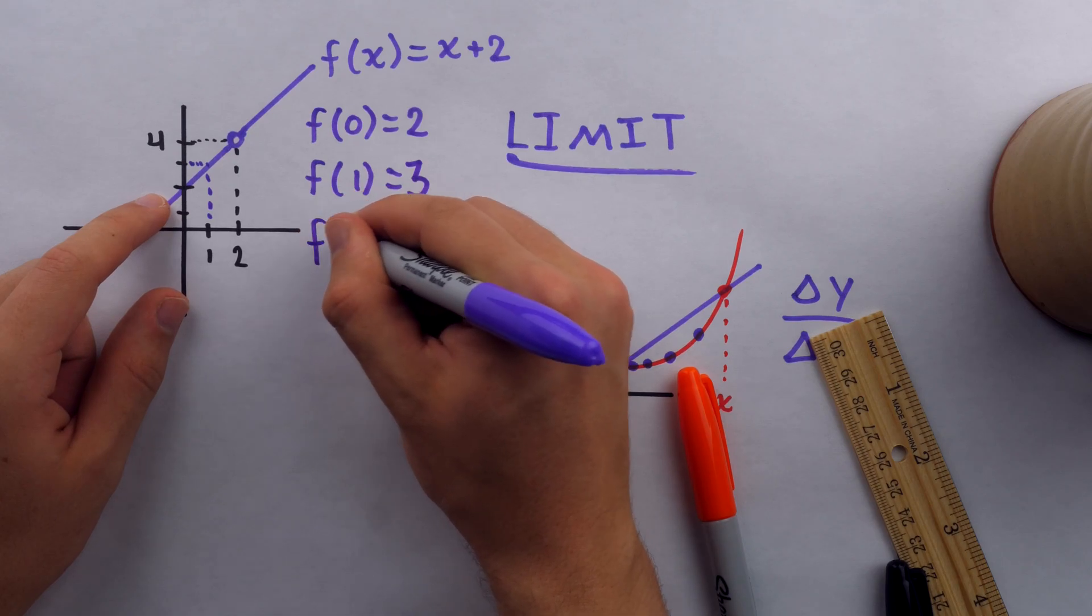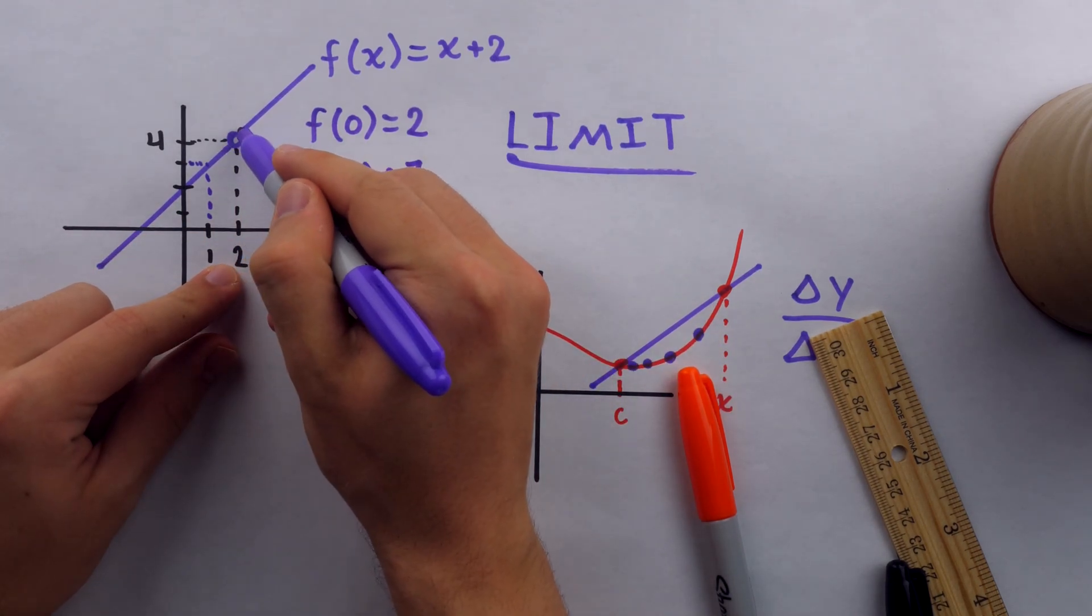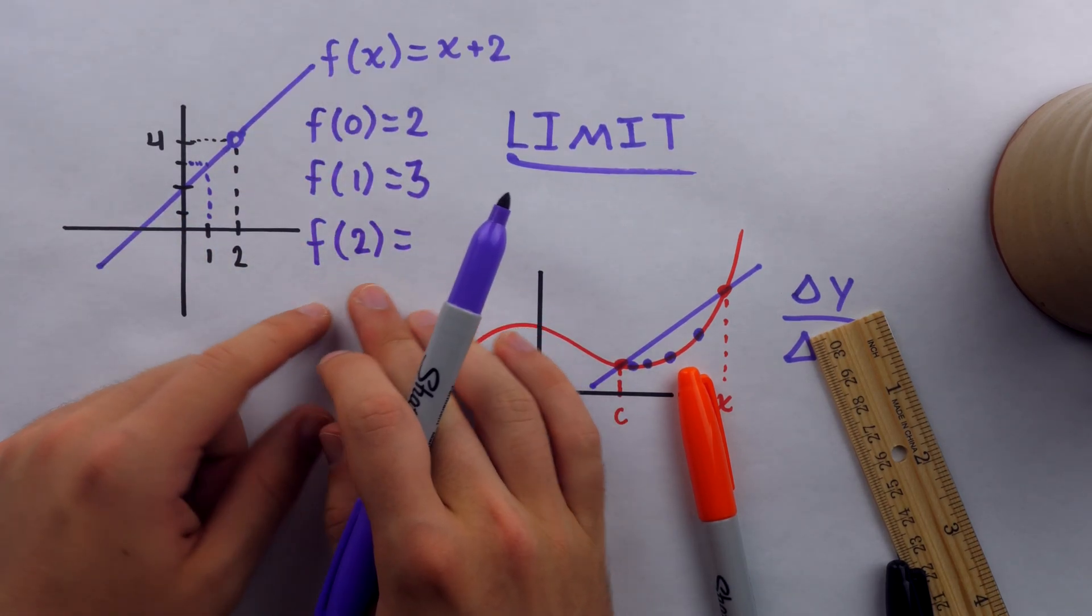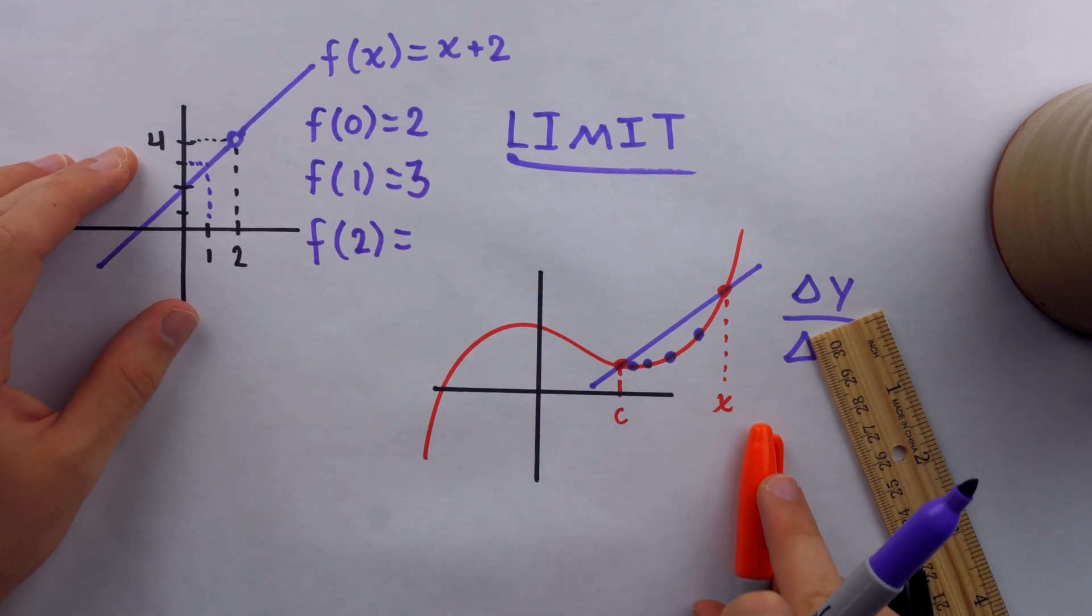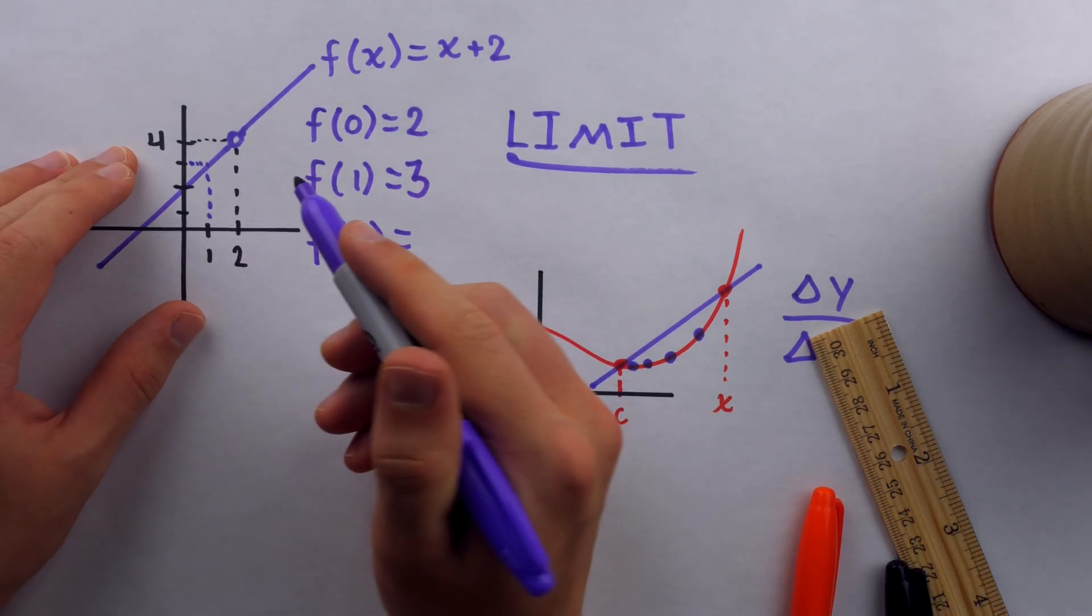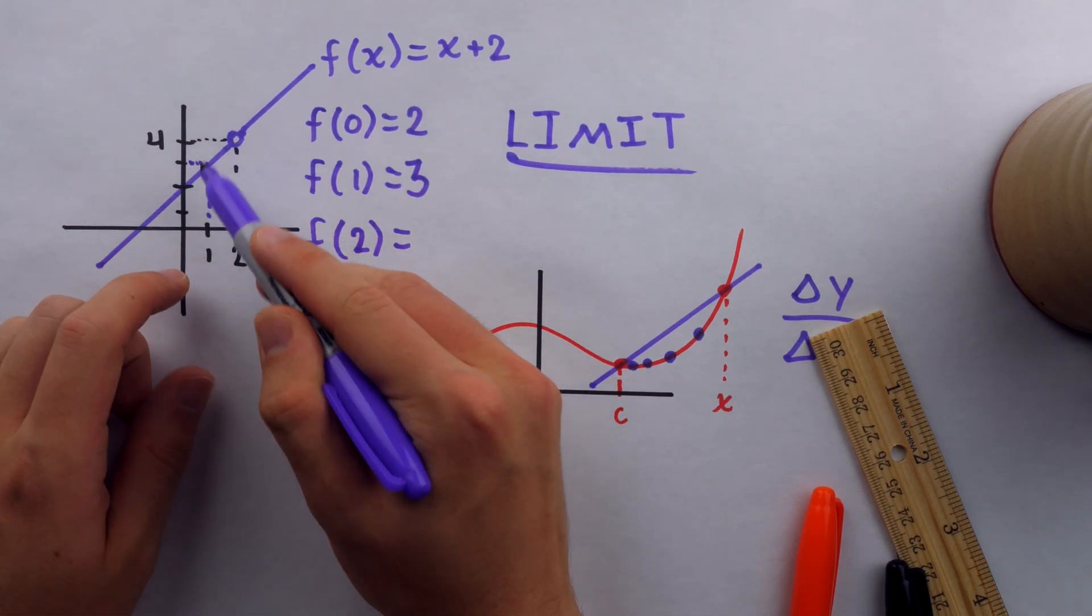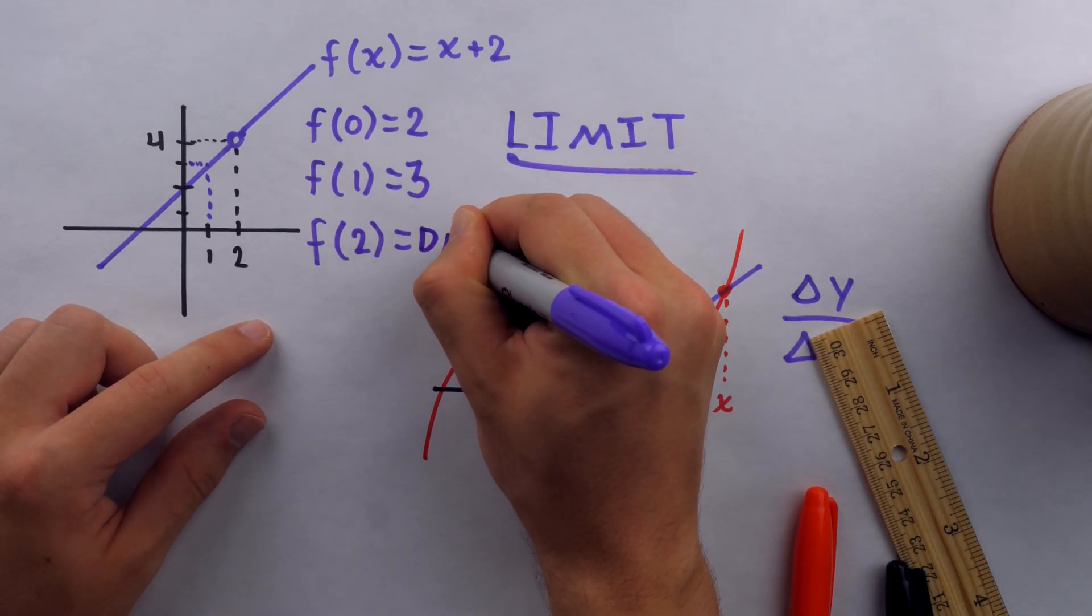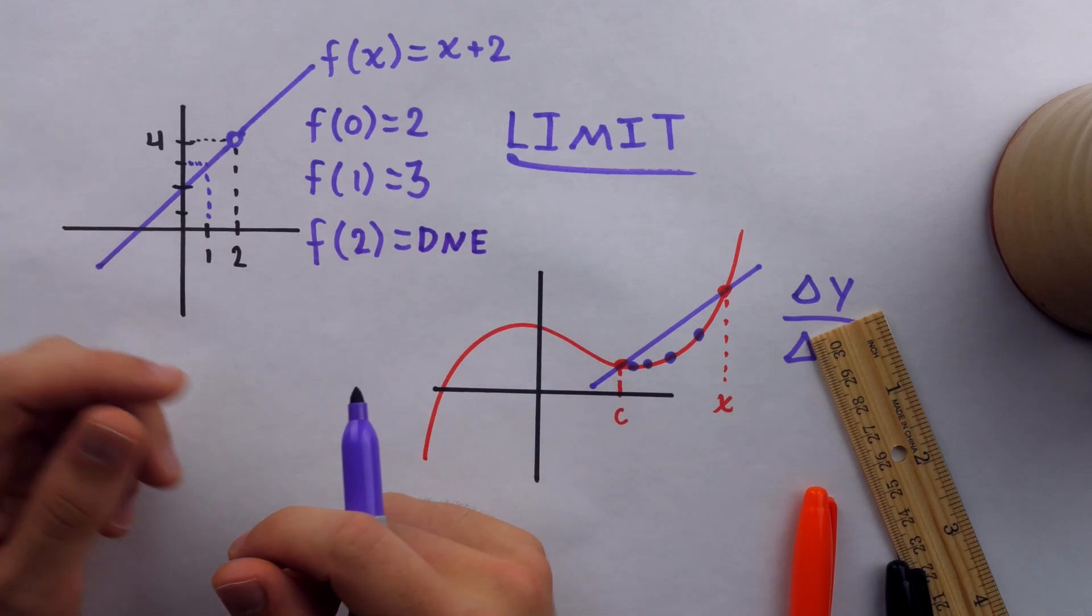But if I then go to f of 2, well there's an issue. The function has a hole there. The function isn't defined at x equals 2. Now at this point in your mathematical journey, that probably seems like some rather peculiar behavior, and that's fine, but you do have to understand that. The function is not defined here. That's what the hole is representing. So for f of 2, we might just write DNE. f of 2 does not exist. There isn't a value of the function when x equals 2.